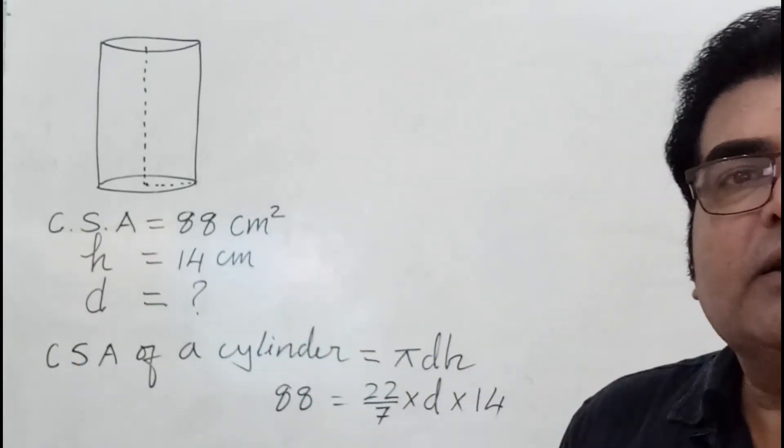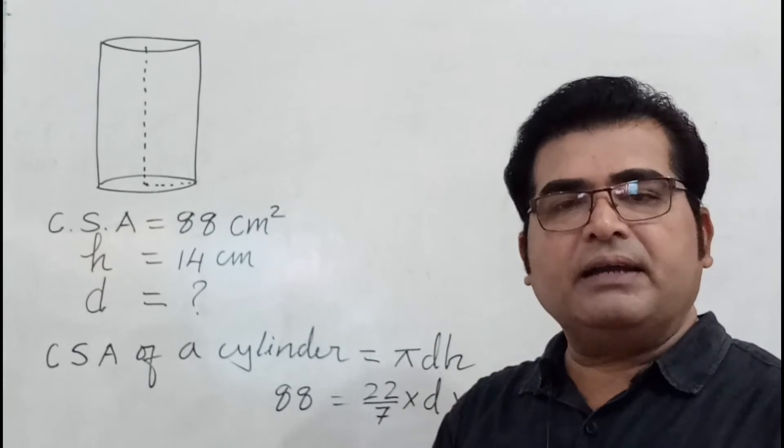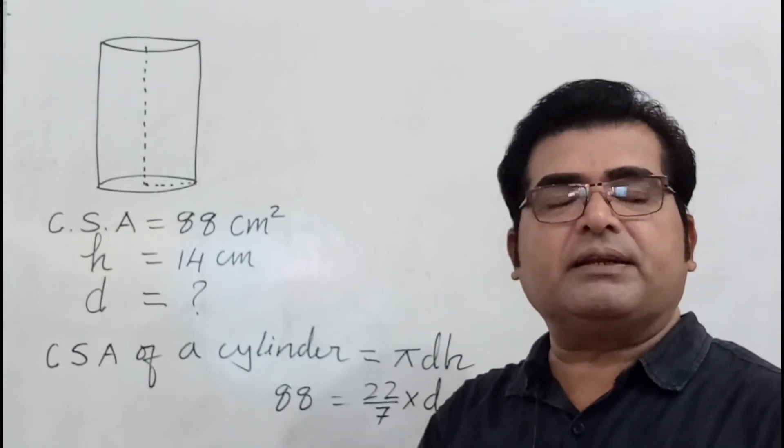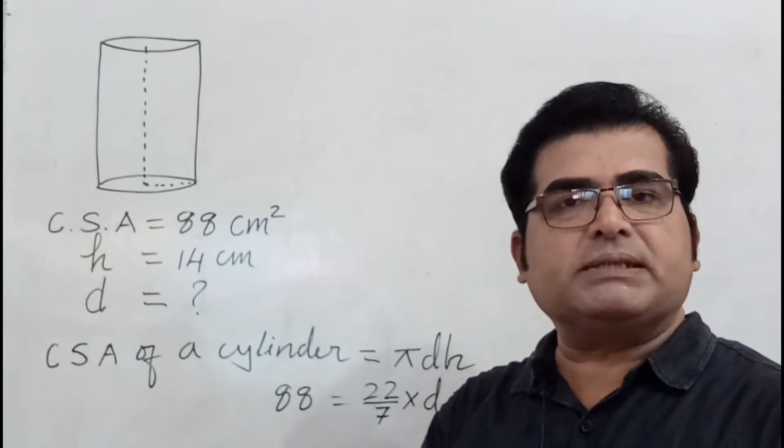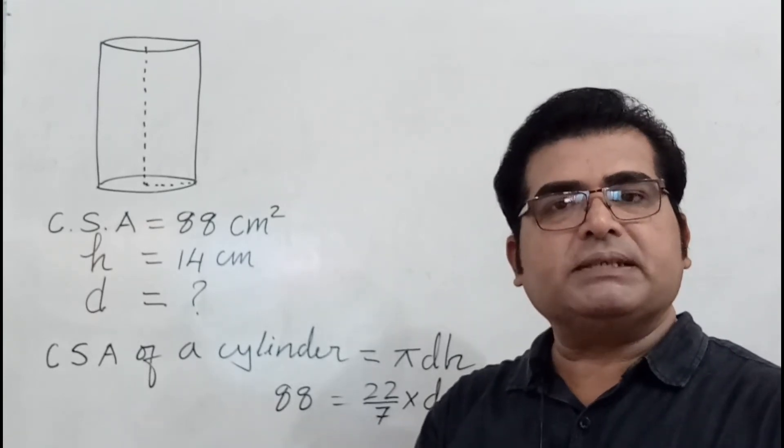Let's solve this. In this question, the curved surface area is given and height is given. We have to find the diameter, so we'll use the formula for curved surface area of a right circular cylinder.